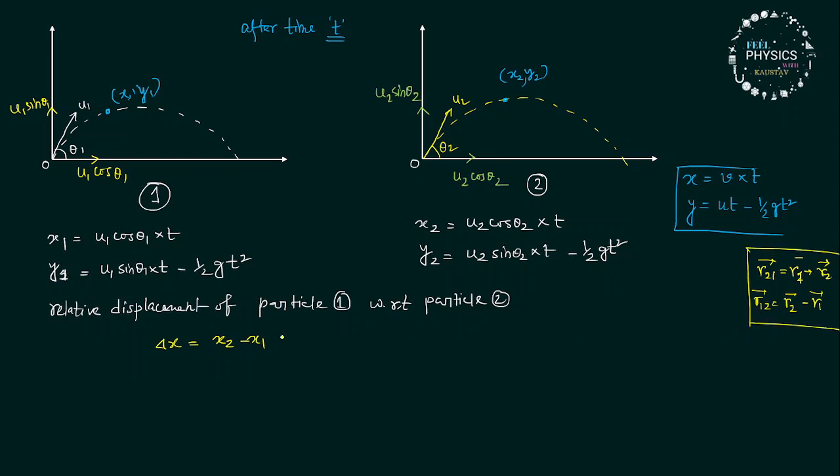So, here we will have u2 cosθ2 minus u1 cosθ1 with t in common. And delta y equals y2 minus y1. It will give us u2 sinθ2 minus u1 sinθ1 into t. And the half gt squared terms will cancel out each other.